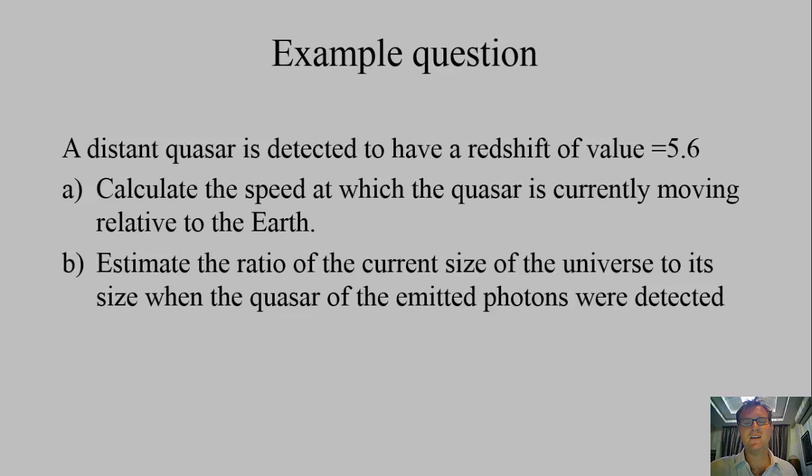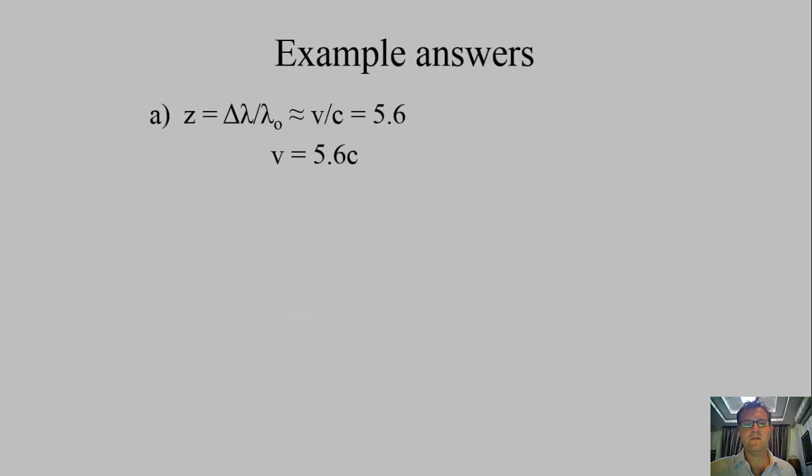So how do we do this? Well if we know that the redshift equals 5.6, the redshift is also equal to the recession velocity divided by the speed of light. So therefore the velocity is equal to 5.6 times the speed of light. Now that 5.6 times the speed of light, I know nothing can move faster than the speed of light, there's some issues there, but as an example that's our number.